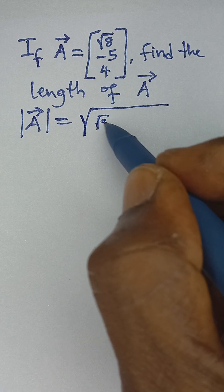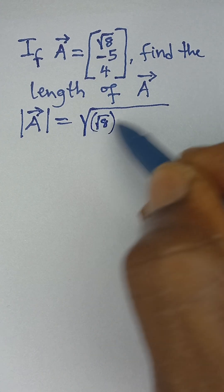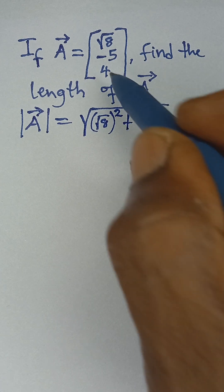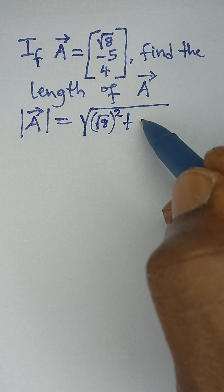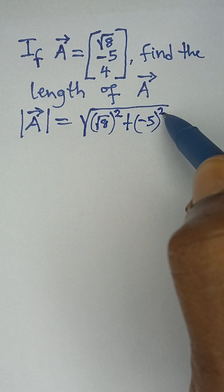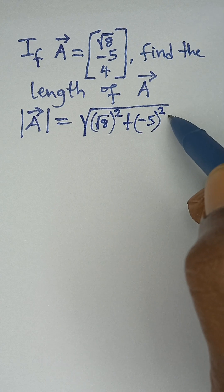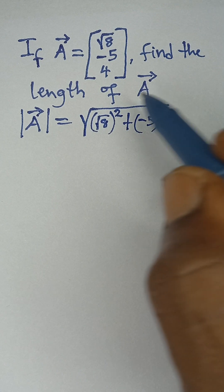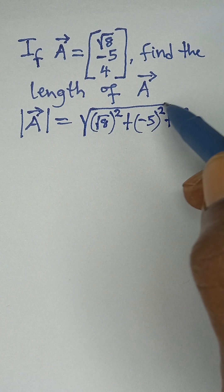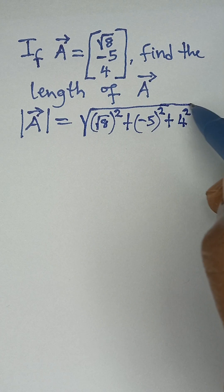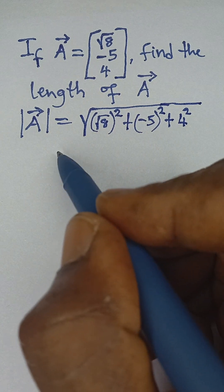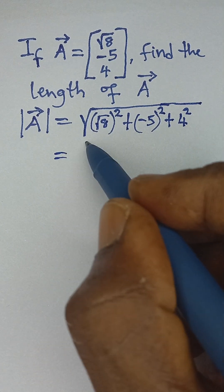We take the square root of: the first term √8 squared, plus the second term negative 5 squared, and finally the third term 4 squared. That is how to get the length of vector a, and now we simplify.